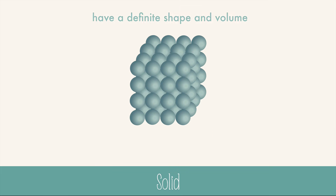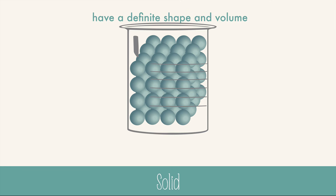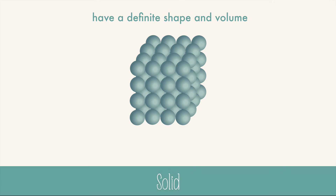Solids have a definite shape and volume. This means that no matter what container you put the solid in, the solid will maintain its original shape. The particles that make up solids are tightly packed together with just a little bit of movement. Solids are also incompressible because the particles are already so tightly packed together.